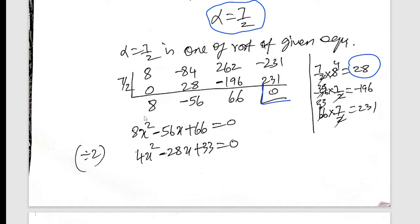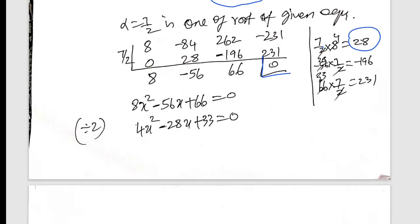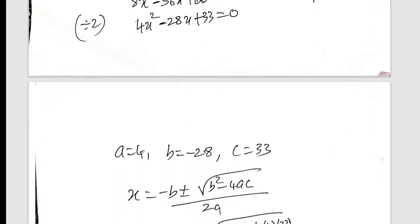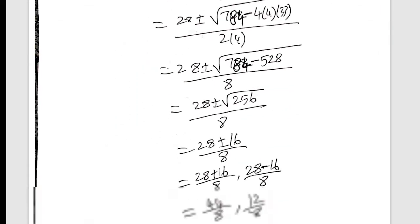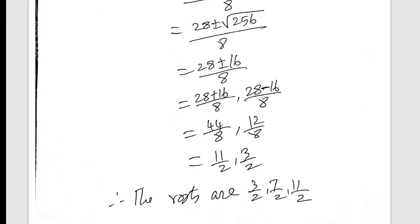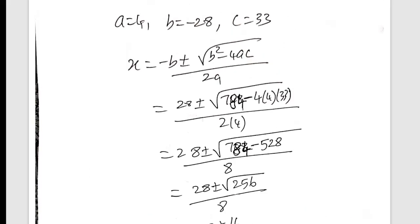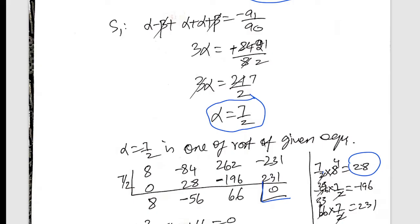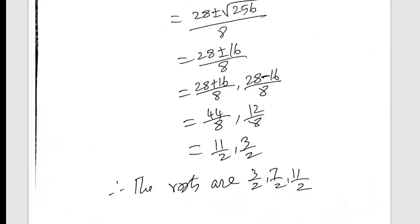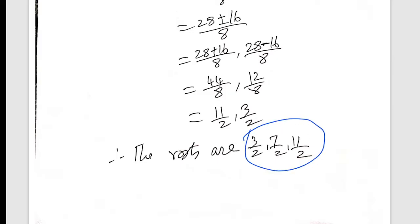7 by 2: that is 8 into 7 by 2, 2 cut for 28, in order to add minus 56. Into sound by 2, capital 28 into 7 minus 196, in order to subtract minus 66 into sound by 2, 33 into 7 to 31. A value, B value, C is the factor. The last: add by A and subtract by 8, cancel the line by 2 and 3 by 2. Alpha value is 7/2. So the roots are 3/2, 7/2, 3/2. This is the root.